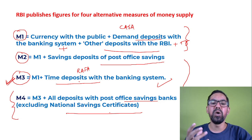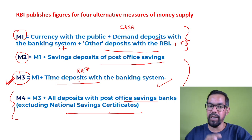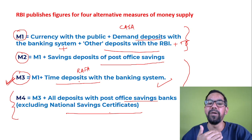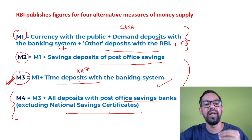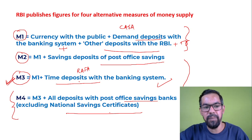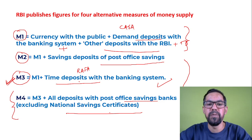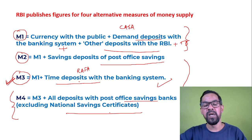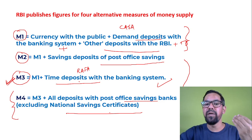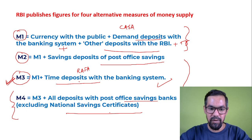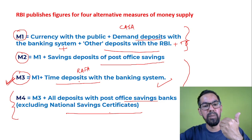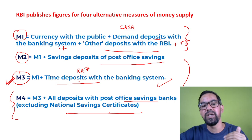So money supply is the overall amount of money in any economy. In India, since 1977, RBI uses these four measures to calculate money supply: M1, M2, M3, and M4. M1 is generally part of narrower money, while M2, M3, and M4 are generally part of broader money. Since 1977, RBI presents money supply figures using all four measures.